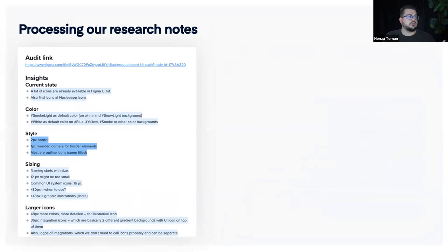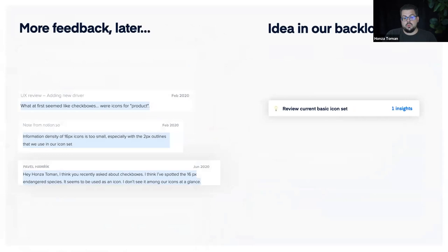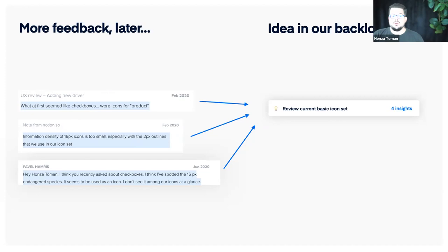What Productboard allows us to do is take a note with insights, highlight pieces of it, and connect them or create ideas in our backlog. When more feedback appears later, we can do the same thing and link that feedback to a previous idea — so it now has multiple insights connected, and we can track it over time.